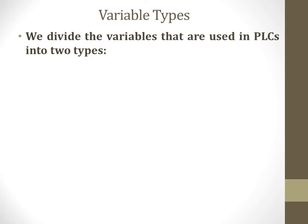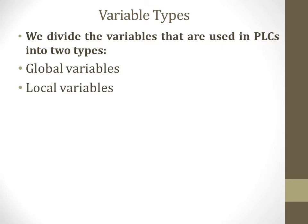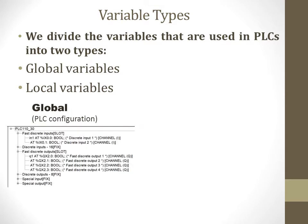The first type of variable we call global variables, and the next we call local variables. If we speak about global variables, this type of variable is connected with PLC programming modules. In other words, global variables are the channels of real modules of a PLC.